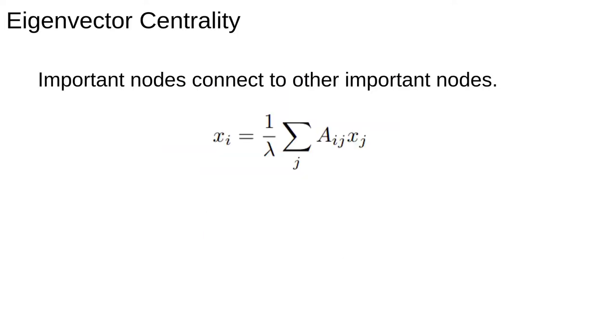The first one that we consider is the idea of eigenvector centrality. The key idea behind this is that important nodes should be connected to other important nodes. Now this may or may not fit your application but based on this idea we can define a way to measure importance.